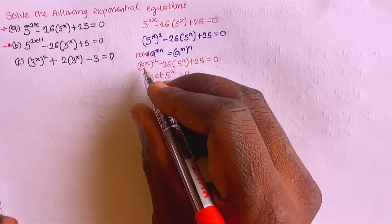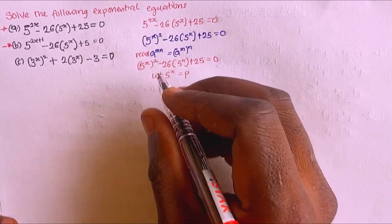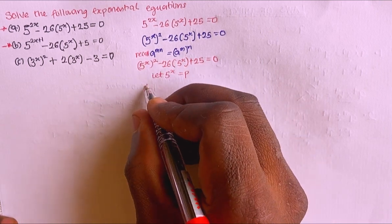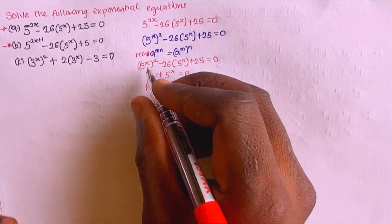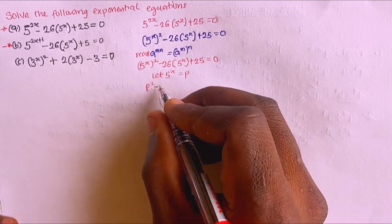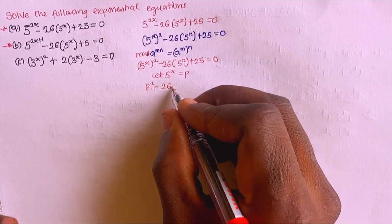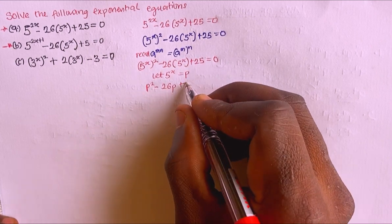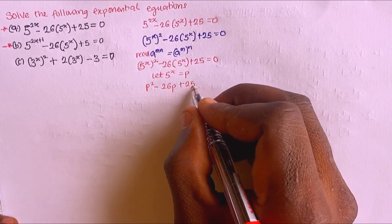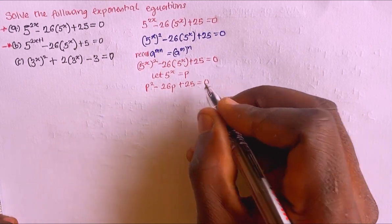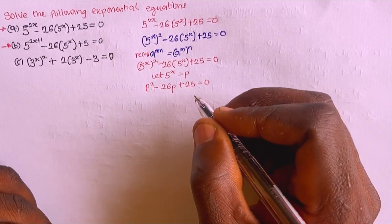What I'm going to do is let 5^x equal p. If I substitute p in, I'm going to have p² minus 26p plus 25 equals 0.